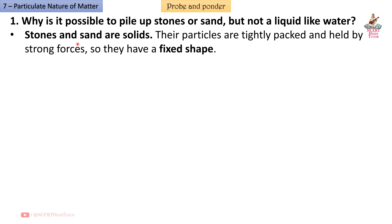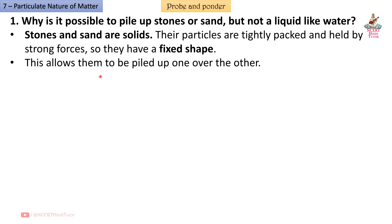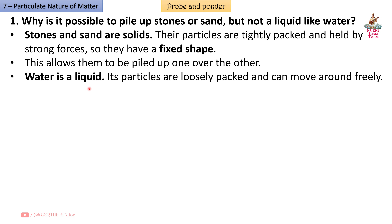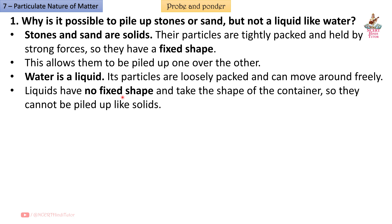Answer: Stones and sand are solids. Their particles are tightly packed and held by strong forces, so they have a fixed shape. This allows them to be piled up one over the other. Water is a liquid — its particles are loosely packed and can move around freely. Liquids have no fixed shape and take the shape of the container, so they cannot be piled up like solids.